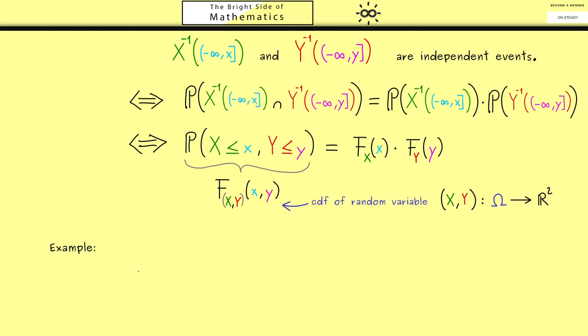And I want to keep the example very general such that we can see that often independence occurs. Indeed, this works with a product space where omega is given as omega_1 times omega_2. Then the random variable X should live on omega_1 and the random variable Y on omega_2.